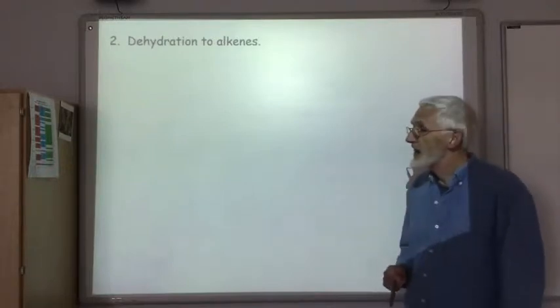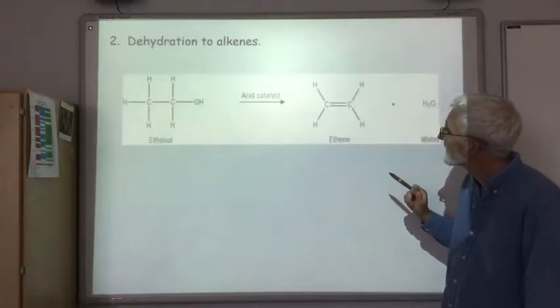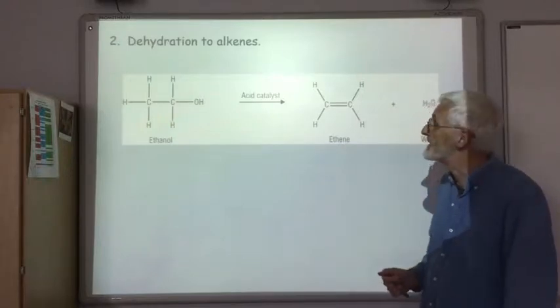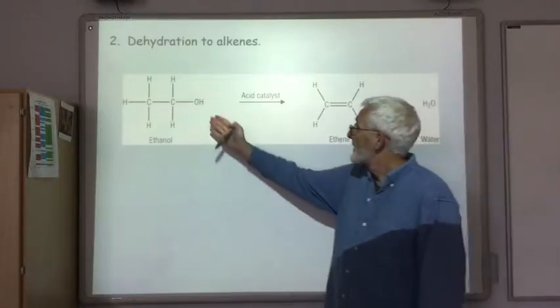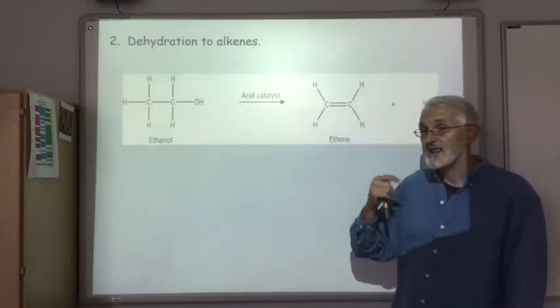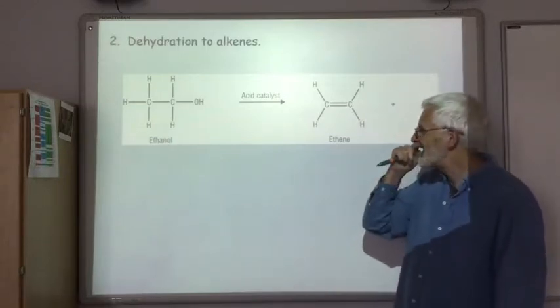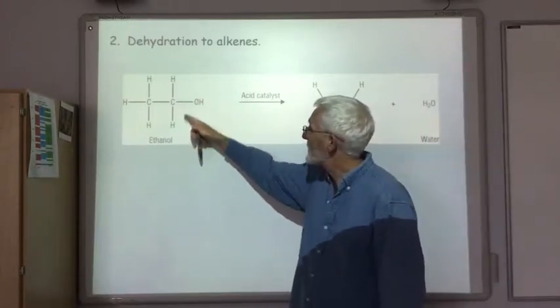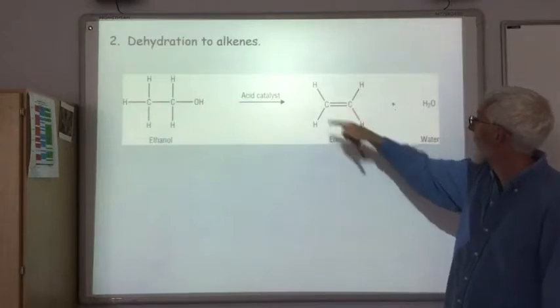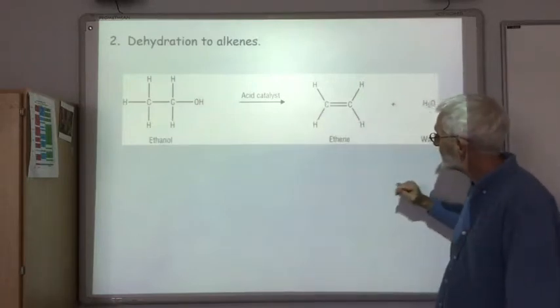Okay next reaction is the dehydration to alkenes. And we came across this as a way of preparing alkenes. So this can be catalyzed by an acid. Now you did this in an experiment, you did the dehydration of cyclohexanol to cyclohexene. So you remove the OH group from one carbon and an H from the other carbon and you produce your alkene. In this particular case there's only one alkene produced.